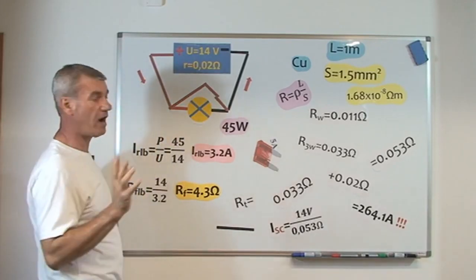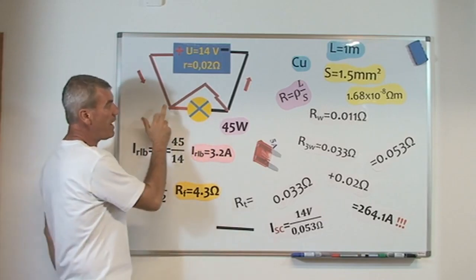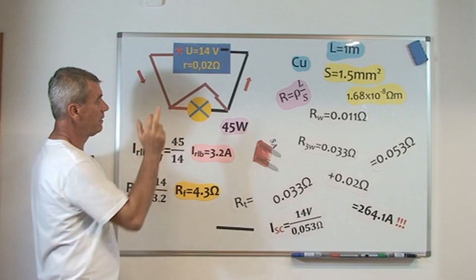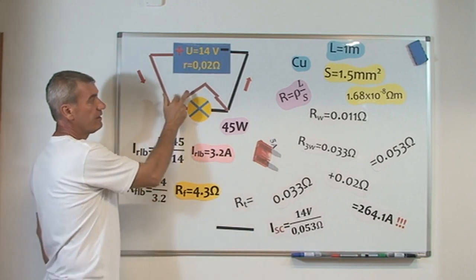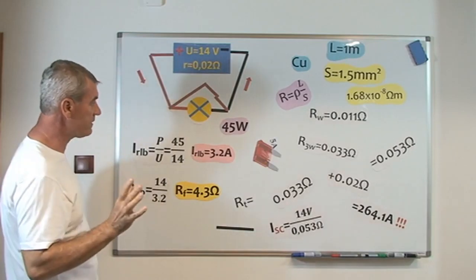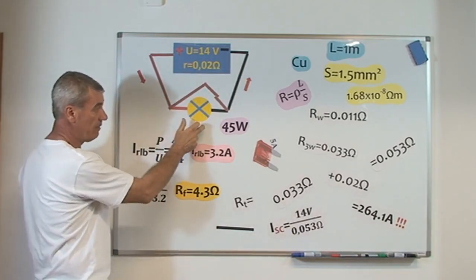In this circuit, our electrical current, which no longer passes through the light bulb, will pass through the wire. Why? Because the electrical resistance of the wire is smaller than the electrical resistance of the light bulb.